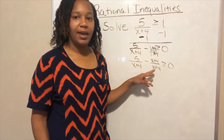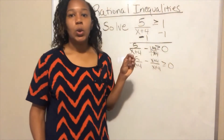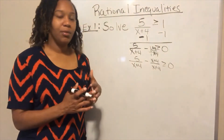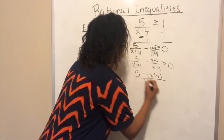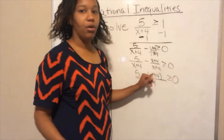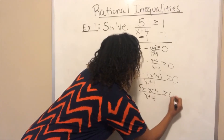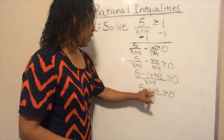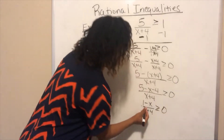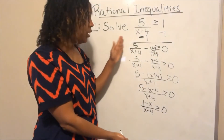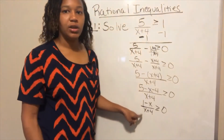Anytime the numerator and denominator are the same, that fraction equals one — so this is still equal to one. Now the denominators are the same and I can combine the two fractions. I'm writing x plus four in parentheses because the minus in front will distribute to both terms. So I get five minus x minus four, all over x plus four, greater than or equal to zero. Combining like terms: five minus four is one, giving one minus x over x plus four, greater than or equal to zero. This is the result of step one.